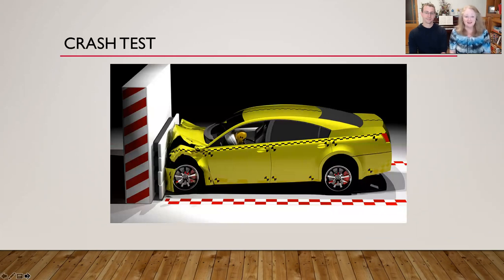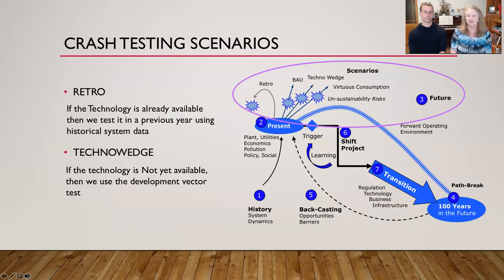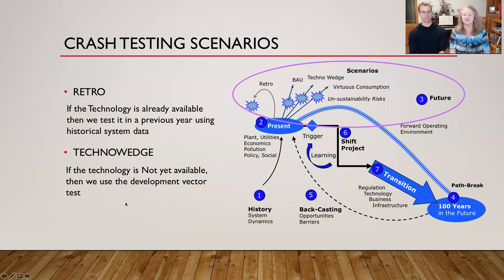Why a crash test lab? Because you actually have to know what's going to happen. That's the crash test — take things for a road test and see what happens. This is step three of the IN-TIME methodology. If you have a technology which is already well known but you think it's going to be used in some new way, or you have a new policy, then we use what's called a retro analysis. What we're going to do here is the techno wedge: you have your business as usual, and you think you're going to change the emissions trajectory by adoption of a new technology that isn't yet really known. So we use engineering calculations to do the crash test.